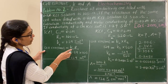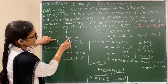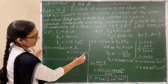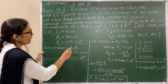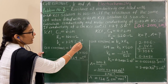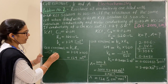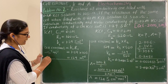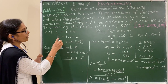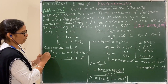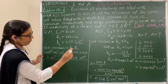Cell constant equals conductivity multiplied by resistance. Using the given values: conductivity is in Siemens per meter (that is per ohm per meter) and resistance is in ohm. The ohm units cancel, leaving the cell constant in units of per meter.